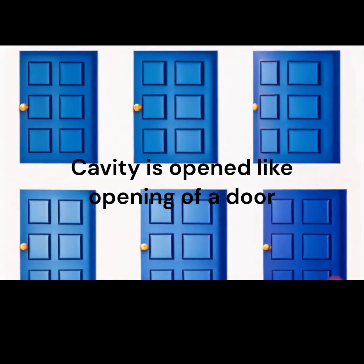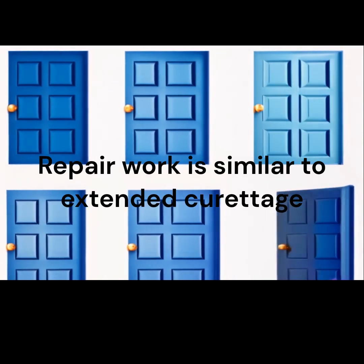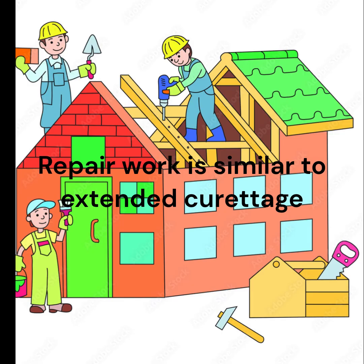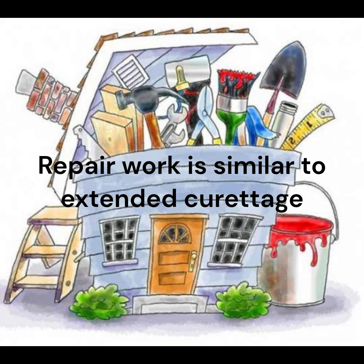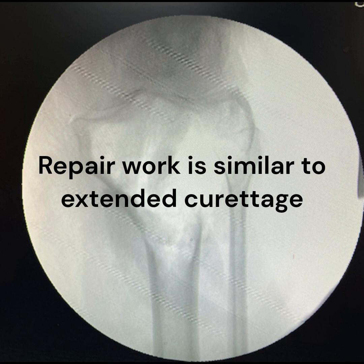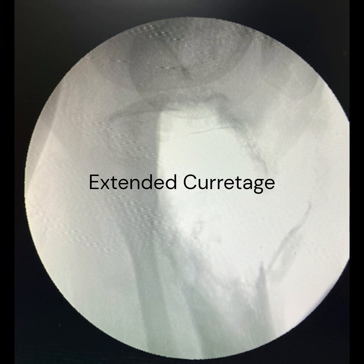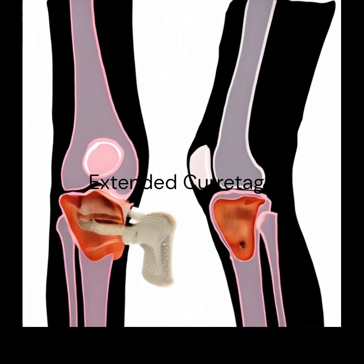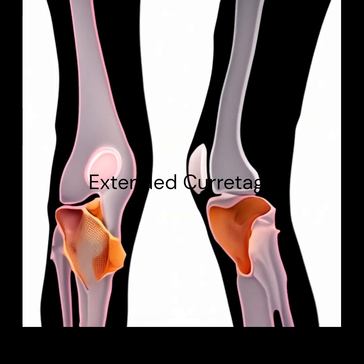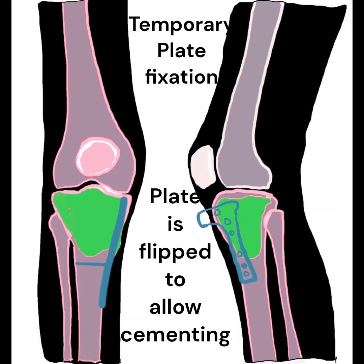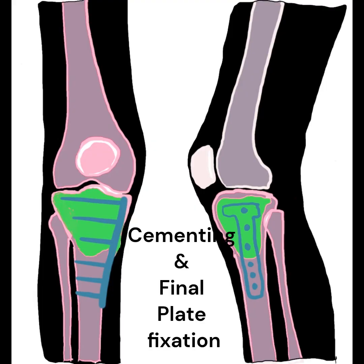This multi-step procedure is tailored to balance oncologic control with the preservation of the bone's structural integrity and the patient's quality of life. To ensure additional stability, particularly if the lesion was extensive or the structural integrity of the bone is compromised, plate fixation is employed. Metal plates are contoured to fit the shape of the tibia and secured with screws above and below the cavity. The plate is temporarily applied, bone cement is placed in the cavity, and then the plate is finalized with permanent fixation.